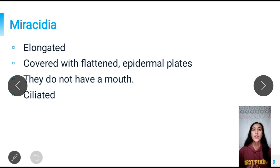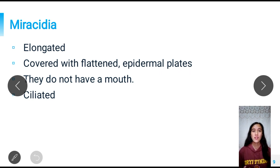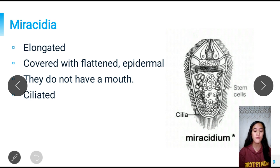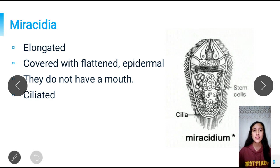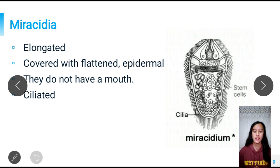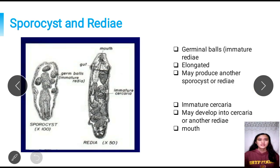Next, we have the miracidium, which is the embryo. This stage is a non-feeding stage because it does not have a mouth. It is elongated, covered with flattened epidermal plates, and is ciliated. The miracidia escape from the eggs through the operculum. It contains stem cells that will differentiate into another form later in their life cycle.